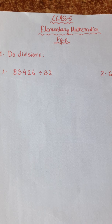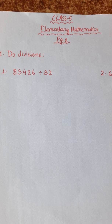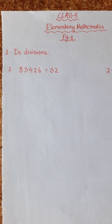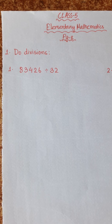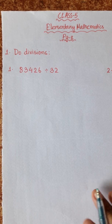We have two divisions today — number 1 and number 2. We start number 1: it is 83426 divided by 32.